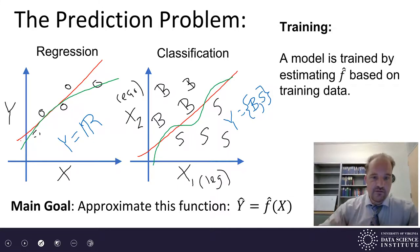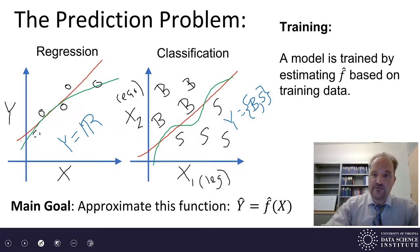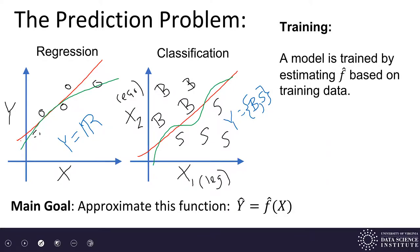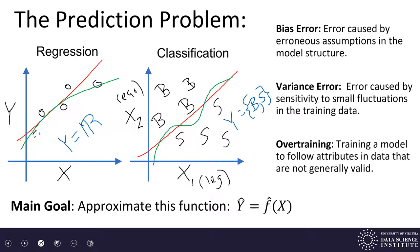The model is this function we're using to approximate the relationship. The way we train the model is to estimate f-hat based on the training data. The training data would be my sets of S's and B's on the right, or the set of houses that have sold with known square footage and price on the left. When training a model for a prediction problem, there are a couple types of errors that can come in, which help us understand whether we should choose a model more like the green curves or more like the red lines. One type is called bias errors.